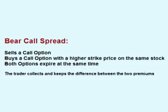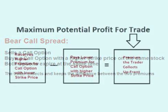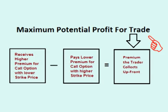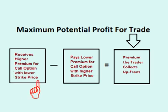In other words, the trader collects and keeps the difference between the two premiums. The trader's maximum potential profit for this trade is the difference between the upfront premium he collects selling the call with the lower strike price and the upfront premium the trader pays to buy the call with the higher strike price.